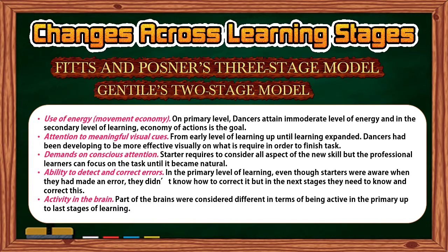Ability to detect and correct errors: in the primary level of learning, starters are aware when they have made an error but don't know how to correct it; in later stages they learn to identify and correct errors. Activity in the brain: different parts of the brain are active at different stages of learning. Nevertheless, all theories carry the idea that all learners should overcome various levels to proceed from starter to skilled mover.